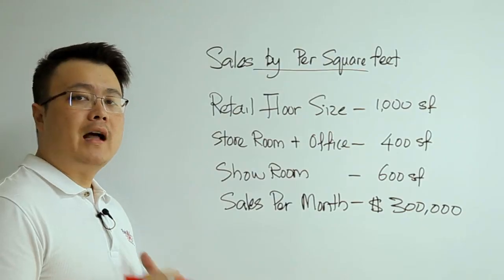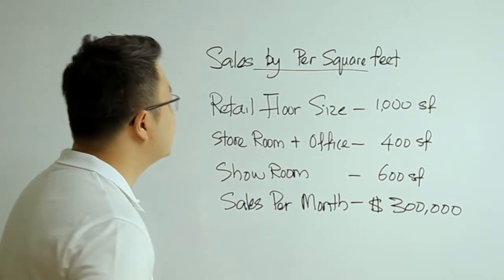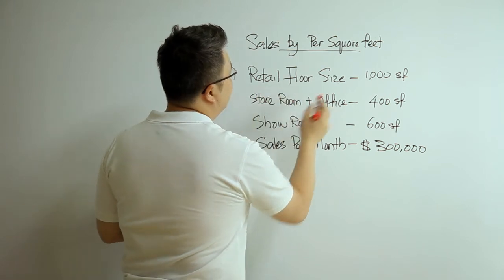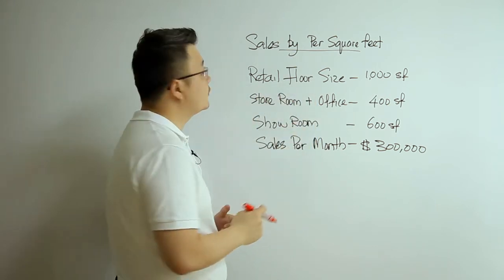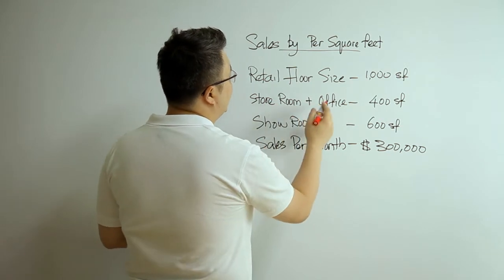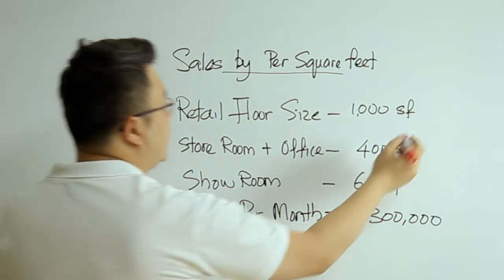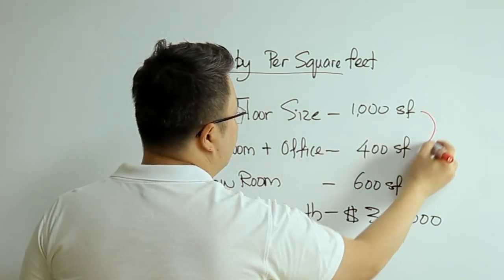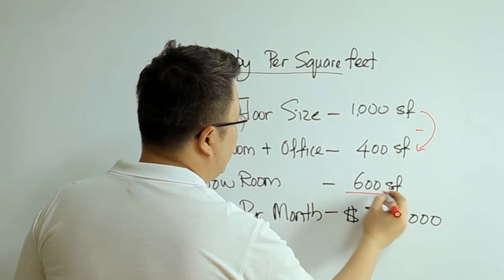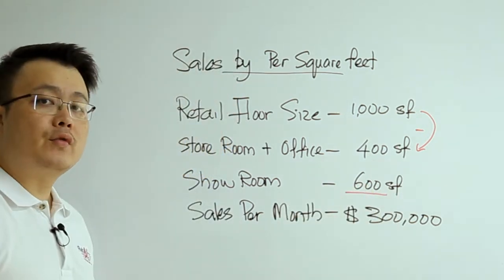You exclude your back room, office, and storeroom. For example, your retail floor size is 1,000 square feet and your storeroom plus back office is 400 square feet. You take 1,000 minus 400, meaning your actual showroom area is 600 square feet.